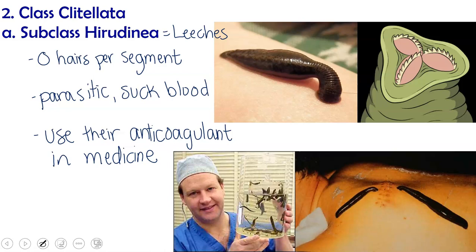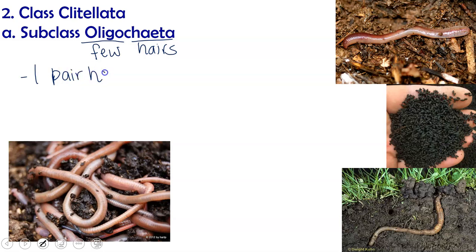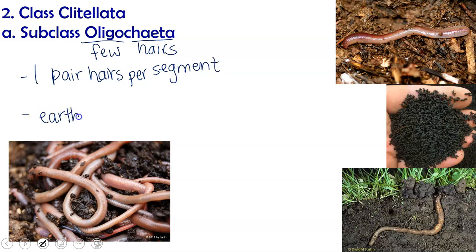Our last group of annelids is subclass Oligochaeta. We know that 'chaeta' means hairs, and 'oligo,' like in oligarchy, means few. So these have few hairs per segment — defined as having one pair of hairs per segment. These include our earthworms, like the ones shown here.